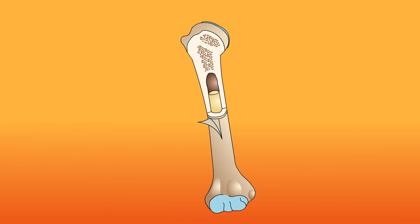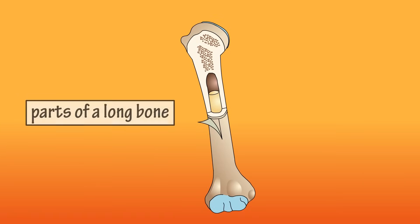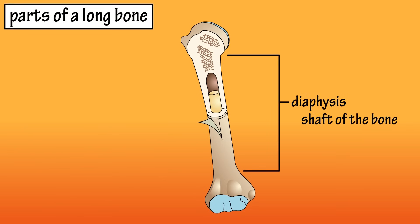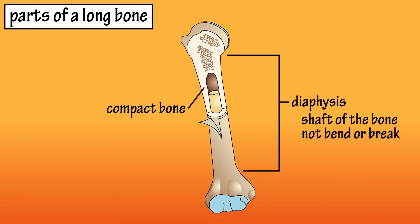In this video, we're going to go over a very basic overview of the parts of a long bone. The diaphysis is the shaft of the bone, and its function is to be rigid enough to tolerate strong forces and not bend or break. The diaphysis is comprised of compact bone tissue and spongy bone tissue.